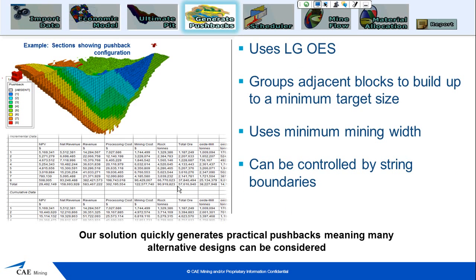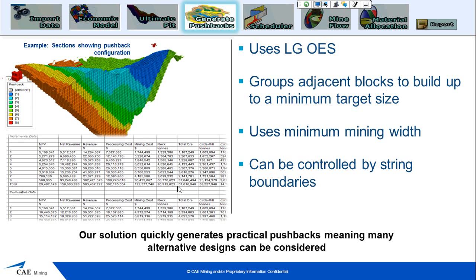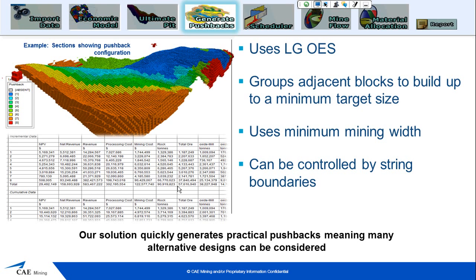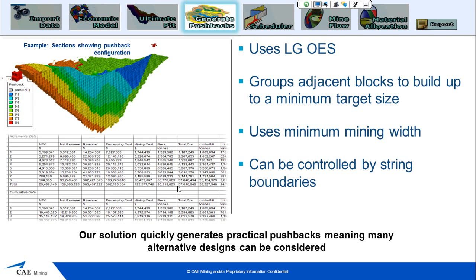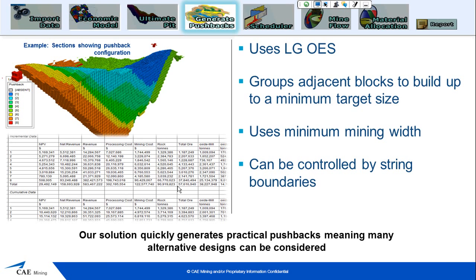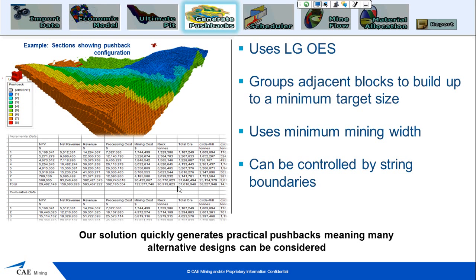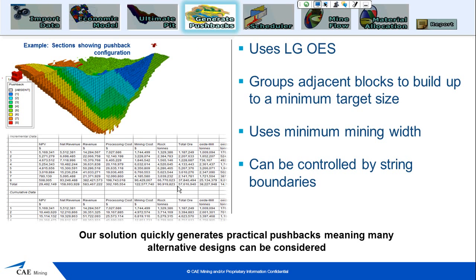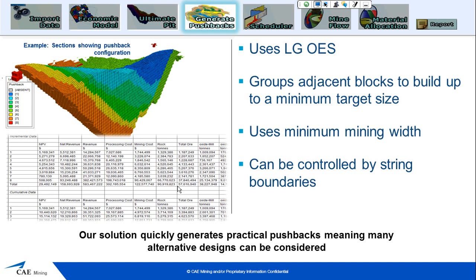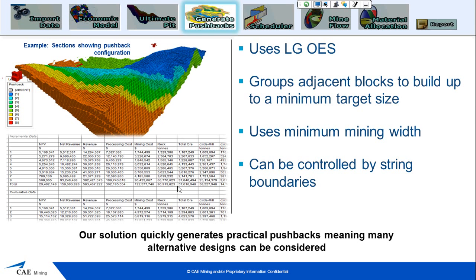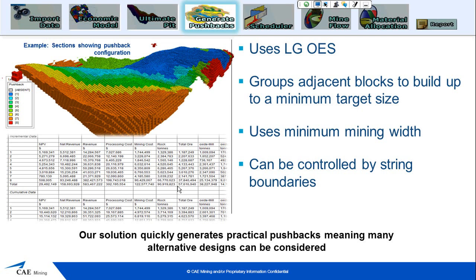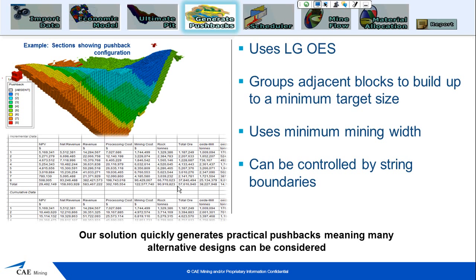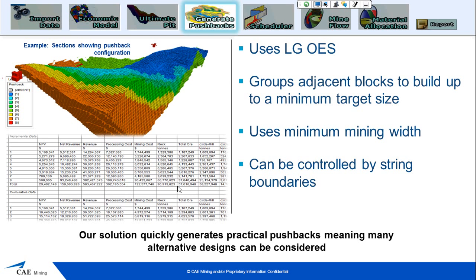With our pushbacks, they are using the OES from the Lerch-Grossman optimisation. We're able to specify a target size for the pushback, and the system will go through and create a pushback that has at least the amount of OES that you specified. It forces blocks that are adjacent or touching together — it will not break up the pushback into different areas — and it uses a minimum mining width. We also have the option to control each pushback individually, or only some of the pushbacks, by string boundaries, and those can be done dynamically in the program.